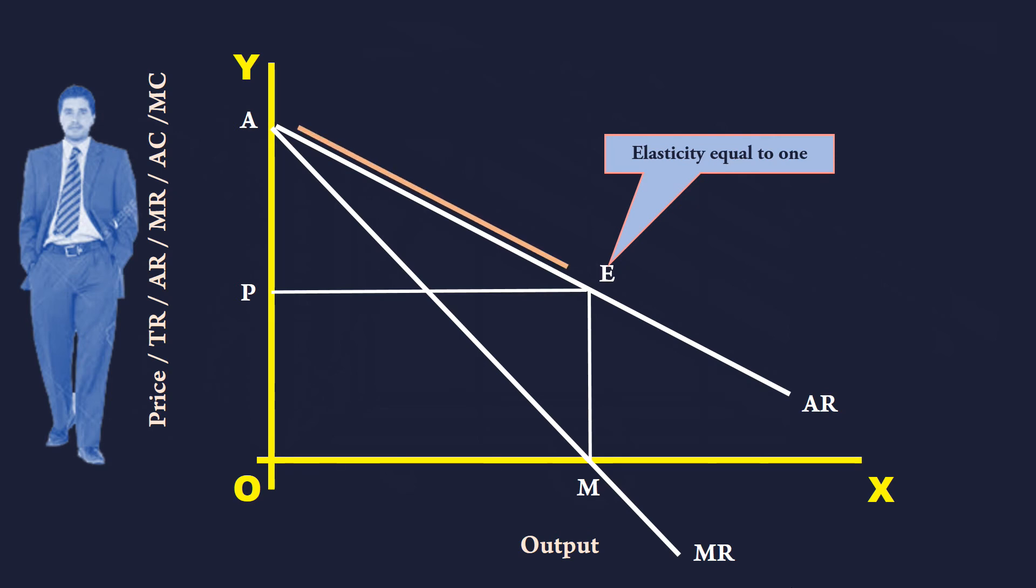Segment EA, that lies to the left of E. In this segment of average revenue curve, elasticity is greater than one. This is the most preferred segment of a monopolist to operate. Because, corresponding to this segment, marginal revenue is positive.